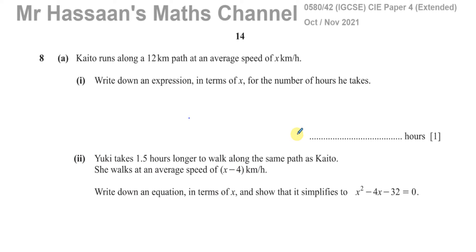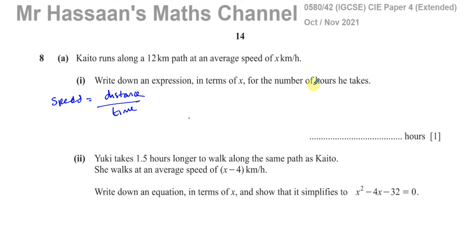Write down an expression in terms of x for the number of hours he takes. We need to know that speed equals distance over time — that's how we link the quantities together. What they gave us is the speed and the distance, and we need the number of hours, which is time. So speed equals distance over time; rearranging gives time equals distance over speed.